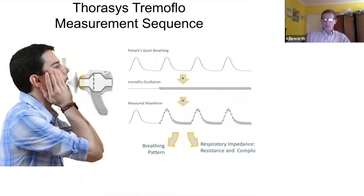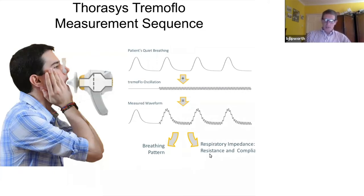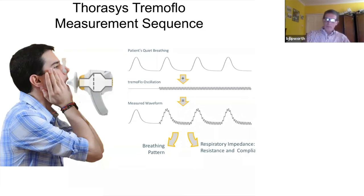That measured waveform generates what we call the respiratory impedance, which is a relationship of pressure to flow. The respiratory impedance has two components: an in-phase component called resistance — exactly what it says — the resistance to airflow; and an out-of-phase component which is the compliance or capacitance of the lung, telling you about the elastic recoil of the lung.